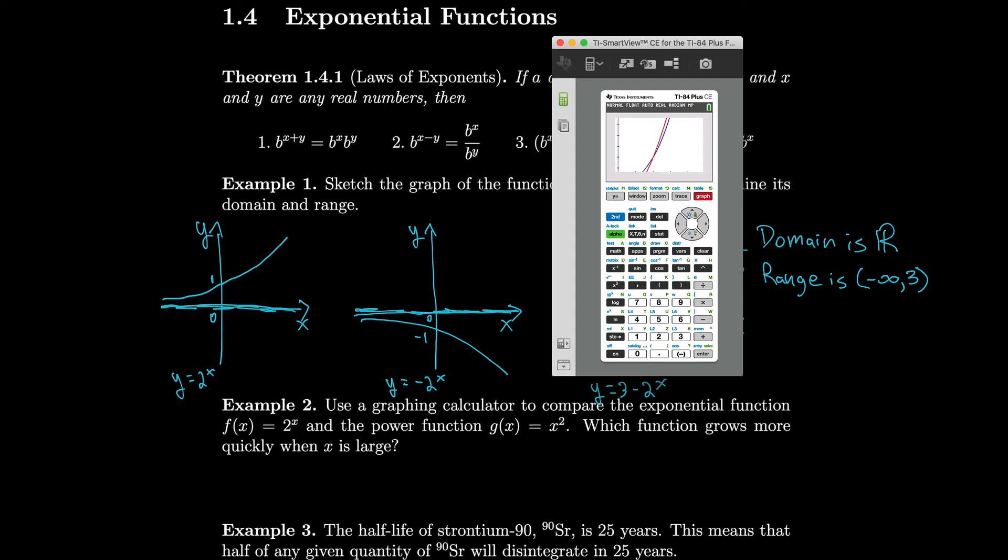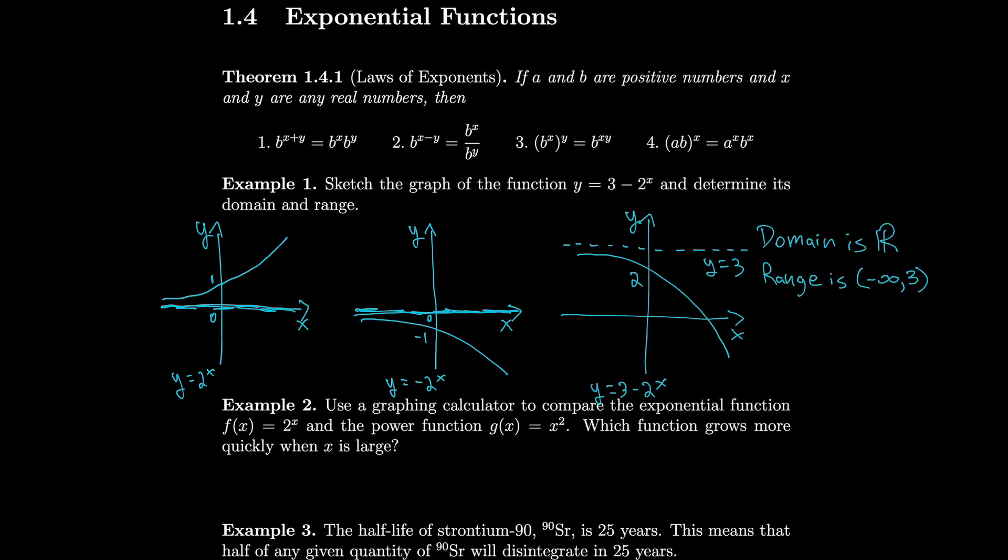But we're only thinking about this when x is large. So when x is large, we can see that it's going to consistently be more. It just takes a little bit of time for it to cross, but it won't cross a second time as we saw when we zoomed out. So exponential functions usually outstrip other functions, especially a power function, but it usually takes a little bit of time.